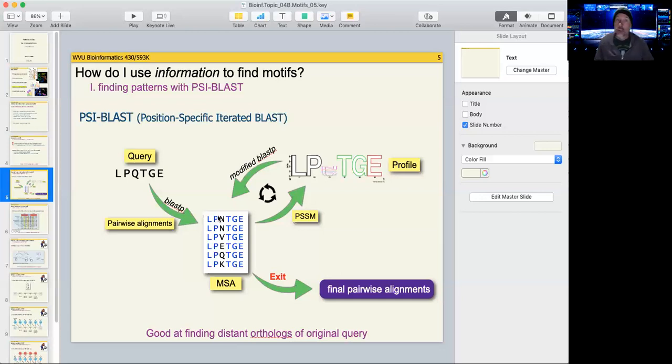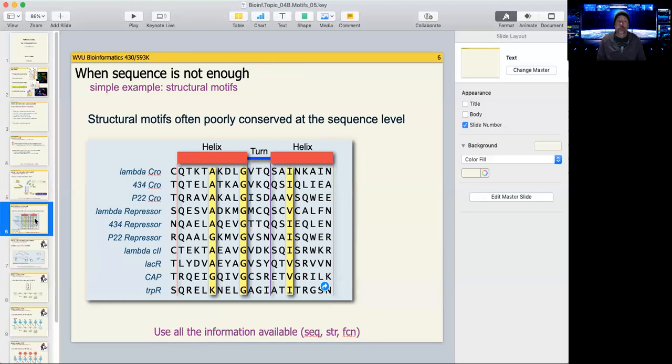But for finding more subtle motifs, where conservation might occur over a larger sequence, maybe more noise in those sequences, something like PSI-BLAST is really useful for identifying those. It's good at finding distant orthologs, as we call them.